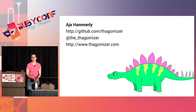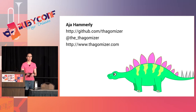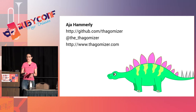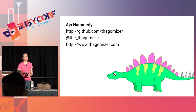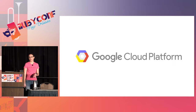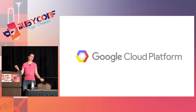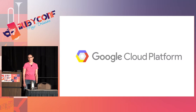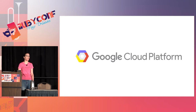I'm Aja Hamerly, I'm on GitHub as Thagamizer. The code from this talk will be posted later today — I need to do some licensing stuff before I can get it out. I tweet as the underscore thagamizer. Assuming that the internet and automation work properly, I have tweeted the slides, which gives you a link to www.thagamizer.com, where I blog and have slides for most of my talks. And I like dinosaurs.